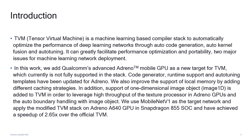In this work, we add Qualcomm's advanced Adreno mobile GPU as a new target for TVM, which currently is not fully supported in the stack. Code generator runtime support and auto-tuning templates have been updated for Adreno. We also improve the support of local memory by adding different caching strategies. In addition, support of a one-dimensional image object or Image1D is added to TVM in order to leverage high throughput of the texture processor in Adreno GPUs. We use MobileNet V1 as the target network and apply the modified TVM stack on Adreno A640 GPU in Snapdragon 855 SoC, and have achieved a speedup of 2.65 over the official TVM.